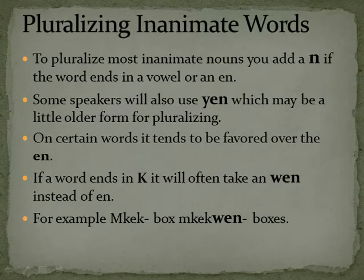Pluralizing Inanimate Words. To pluralize most inanimate nouns, you add an N if the word ends in a vowel, or an -EN. Some speakers will also use -YEN, which may be a little older form for pluralizing. On certain words it tends to be favored over -EN. If the word ends in a K, it will often take a -WEN instead of an -EN. For example, muckok is a box — muckokwin, boxes.